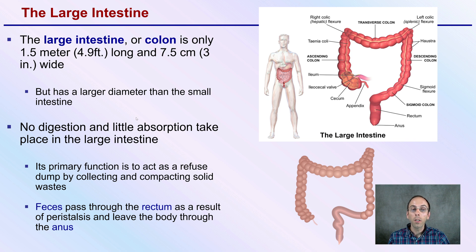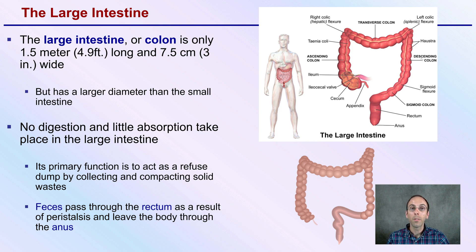No digestion and only a little absorption take place in the large intestine. Its primary function is to act as a refuse dump by collecting and compacting solid waste — the food particles or what's left of them before they're excreted. Feces pass through the rectum as a result of peristalsis and leave the body through the anus.